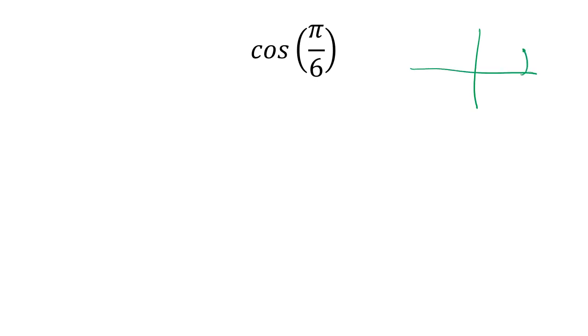What's the cosine of π/6? Right there, the x-coordinate is √3/2, so the answer is √3/2.